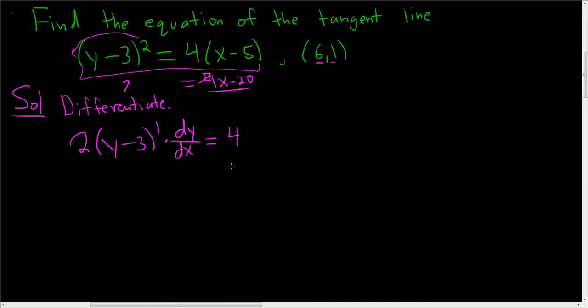All right, at this point, we can solve for dy dx or we can plug the numbers in. Let's just plug them in. So when x equals 6 and y equals 1, we have 2 times 1 minus 3